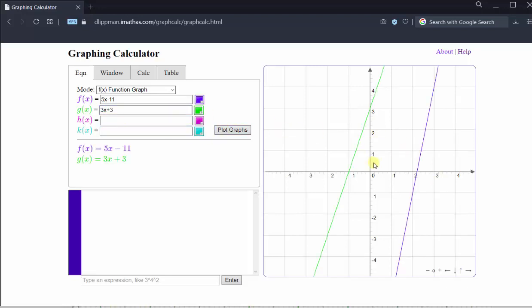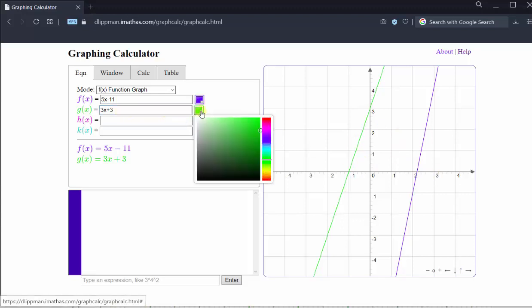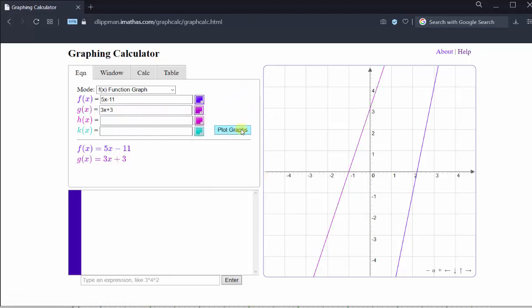Both graphs appear on the coordinate plane. If the green graph is hard to see, we can change the color by clicking the color palette on the right and selecting any color. For example, we can select purple, click outside the palette, click Plot Graphs, and it changes the color of the graph.